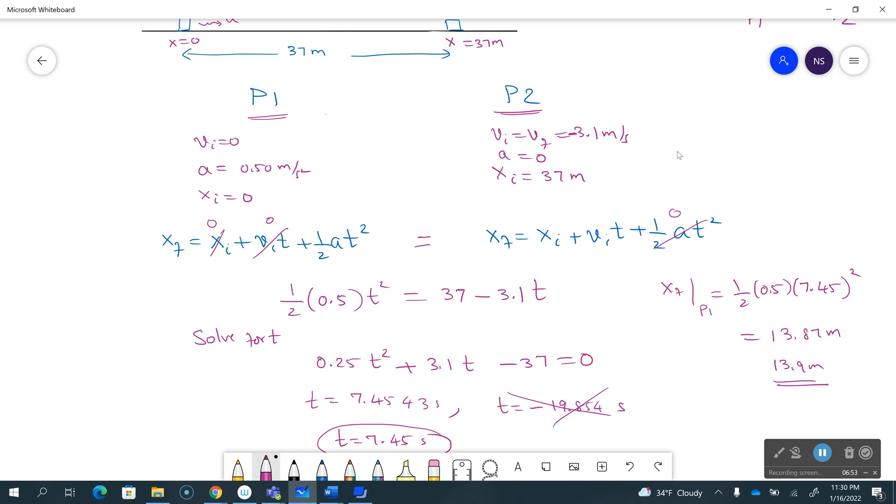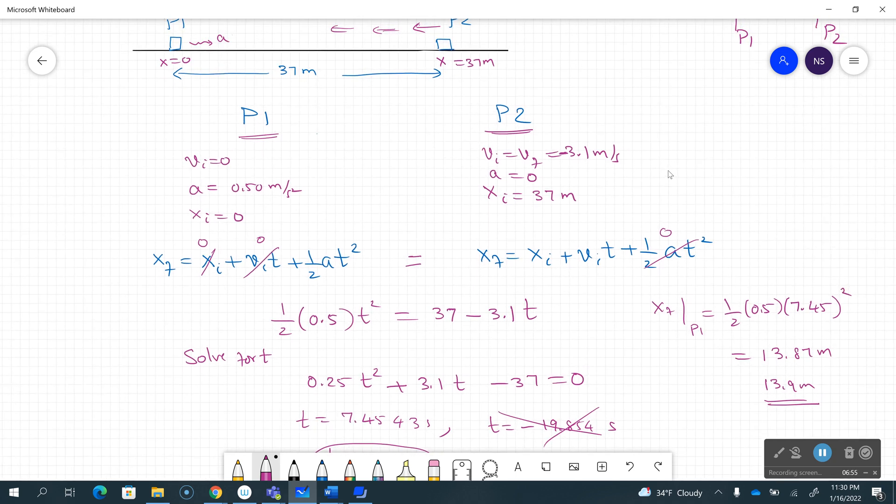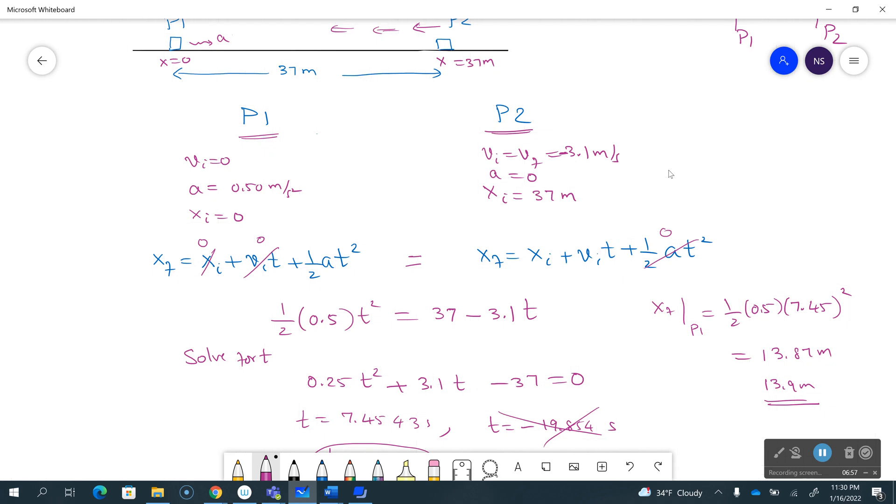And the other player, you should be able to find out that the final position for the other player should also be the same, but the second player would have traveled a distance of 37 minus this much, which is like 23.1 meters. So it all makes sense.